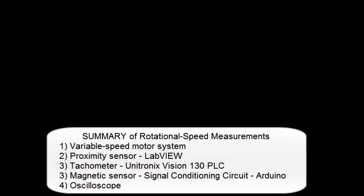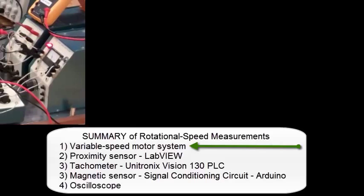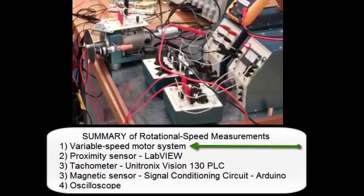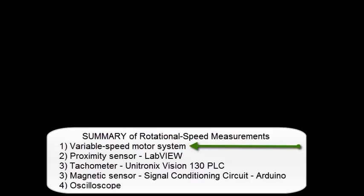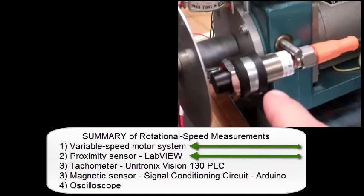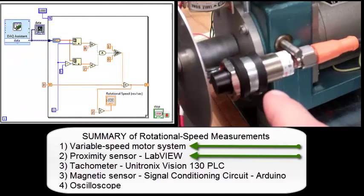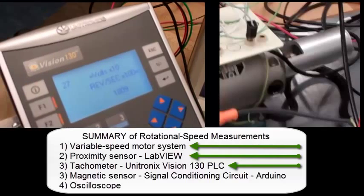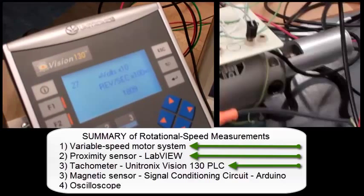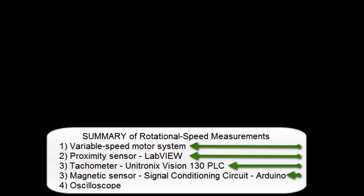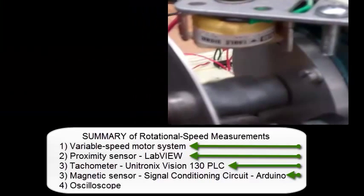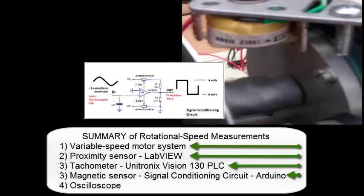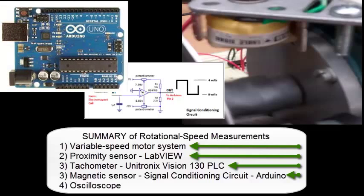Summary of rotational speed measurements. We have a variable speed motor system, a proximity sensor, a LabVIEW program, a tachometer, the Unitronics Vision 130 PLC, a magnetic sensor, a signal conditioning circuit, and an Arduino microprocessor.